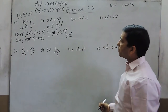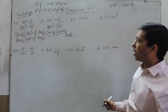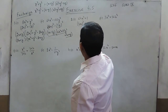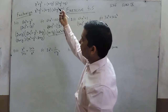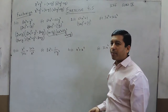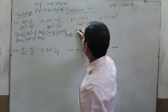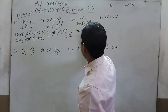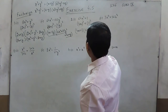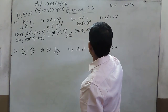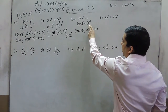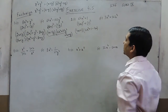Question number 2, part 1: 64x³ plus 1. We can write it directly as (4x)³ plus 1³, and apply the formula x³ plus y³ equals (x + y)(x² + y² − xy). So the first factor is (4x + 1), and the second factor is (16x² + 1 − 4x), because 4x multiplied by 1 gives 4x, which is the xy term.